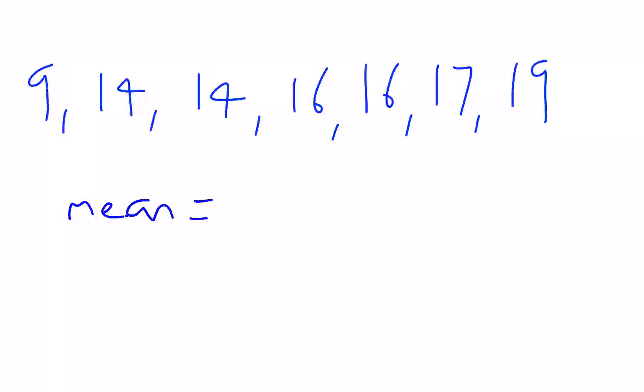The mean was 105 divided by 7, which equals 15. So if everyone had got the same score—if we spread out all their scores amongst them—everyone would have got 15. The average is 15, or the mean.